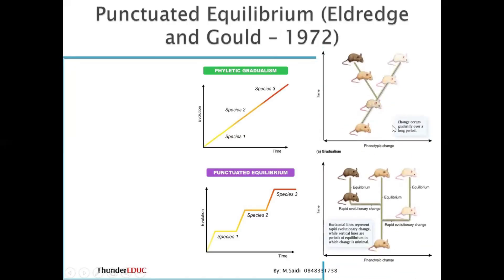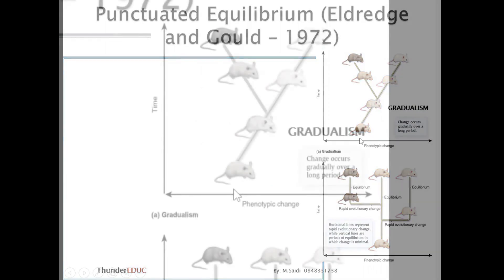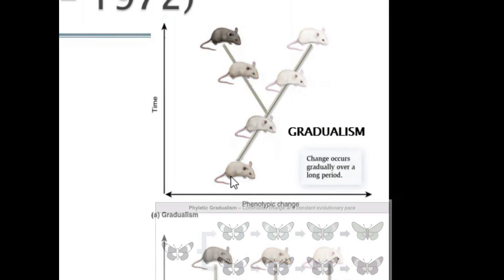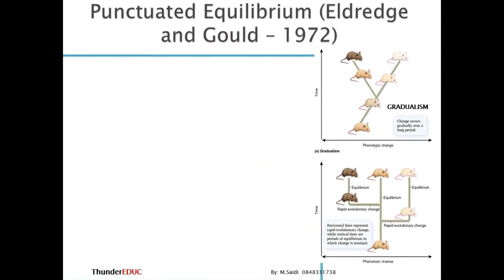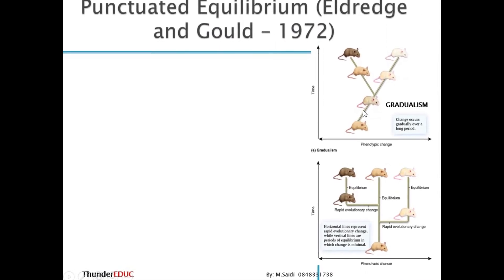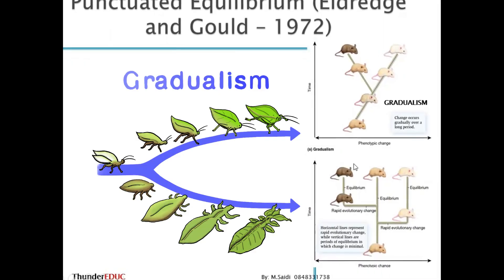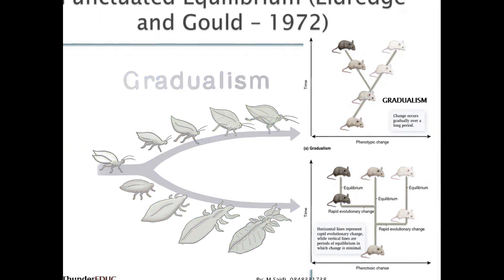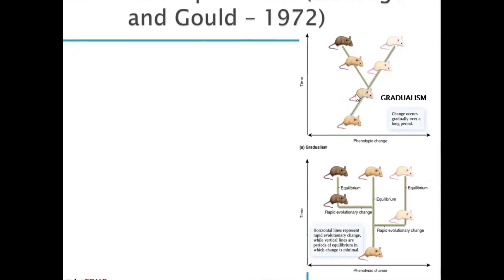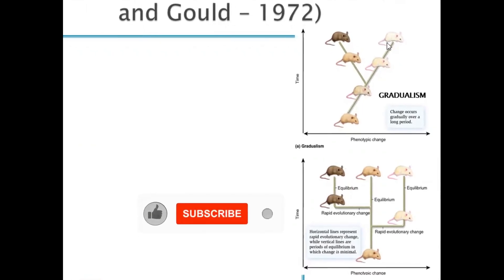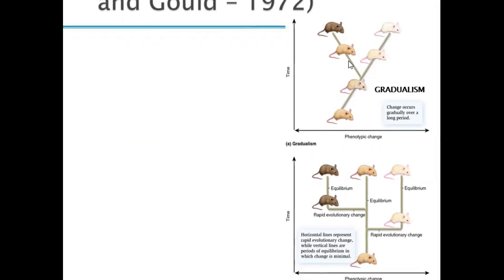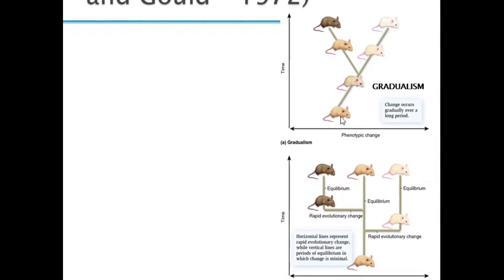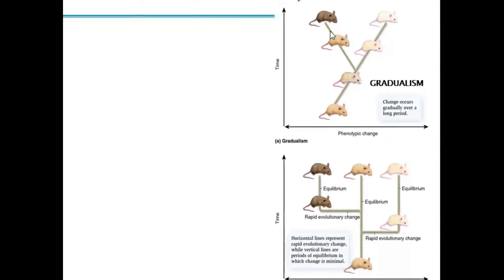Looking at these two diagrams, one is showing punctuated equilibrium and another is showing gradualism. Gradualism shows that a species changes gradually over a great period of time. There is no rush in the changing — from this point to this point the change is gradual, not fast. You can see this rat is trying to change to another color, then to a lighter color, then a very light color. This is a gradual change that did not happen in a single event; it happened over a long period of time.